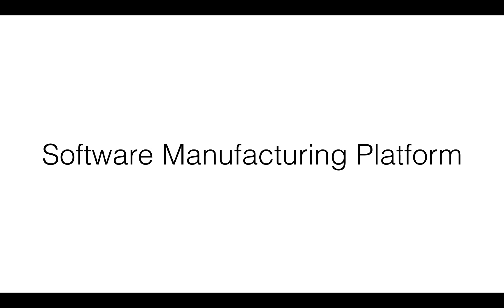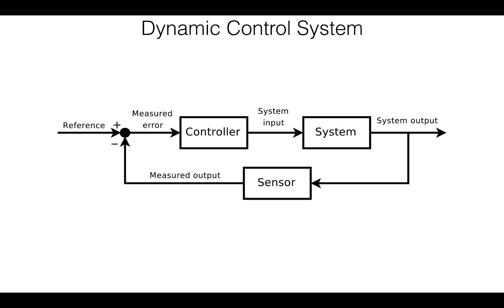Before we get to the details of the Software Manufacturing Platform, let's understand its essence by learning about the underlying theory. The Software Manufacturing Platform is an implementation of the dynamic control system model, illustrated by this block diagram. In this diagram, you provide an input to the controller, which in turn triggers the system to modify the environment, thereby producing some output.